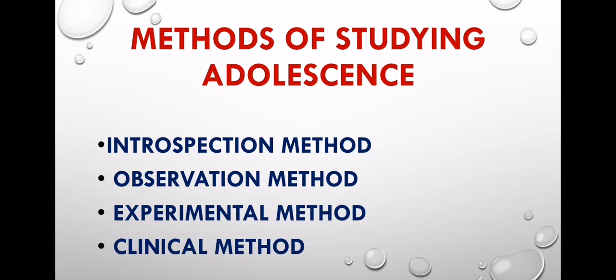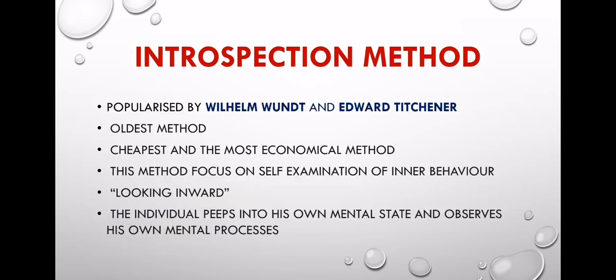Methods of studying adolescence: the first is the introspection method, popularized by William Wundt and Edward Titchener. It is the oldest, cheapest, and most economical method. This method focuses on self-examination of inner behavior — looking inward at one's own mental processes.